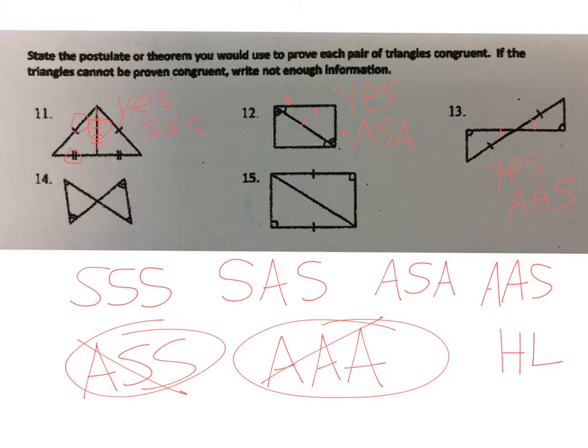Taking a look at number 14, I need to mark my congruent vertical angles. And this gives me a side—I'm sorry, an angle, an angle, and an angle. So that gives me AAA, and that means that it is not congruent, or we can't tell, because it's one of these two that can't show congruency.